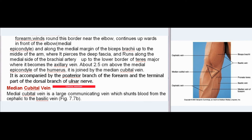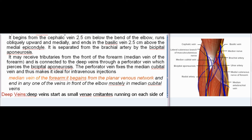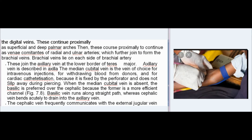The median cubital vein is a large communicating vein which shunts blood from the cephalic to the basilic vein. It begins from the cephalic vein 2.5 cm below the bend of the elbow, runs obliquely upward and medially, and ends in the basilic vein 2.5 cm above the medial epicondyle. It is separated from the brachial artery by the bicipital aponeurosis, may receive tributaries from the median vein of the forearm, and is connected to deep veins through a perforator vein that pierces the bicipital aponeurosis, fixing it and making it ideal for intravenous injections.